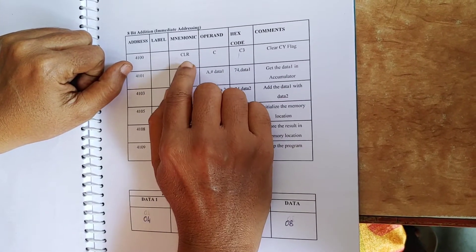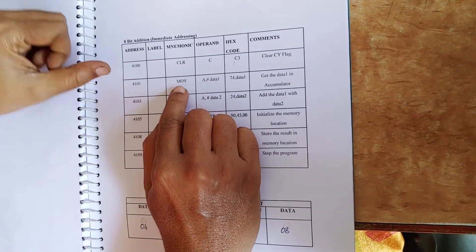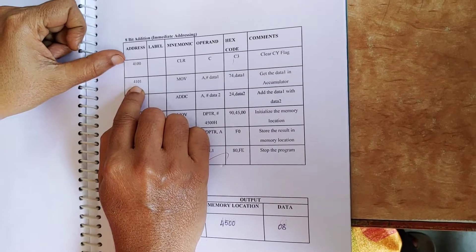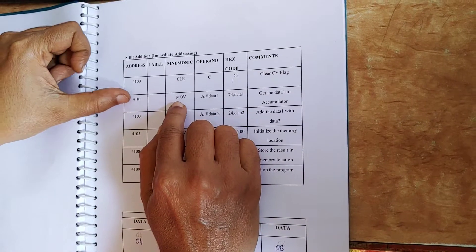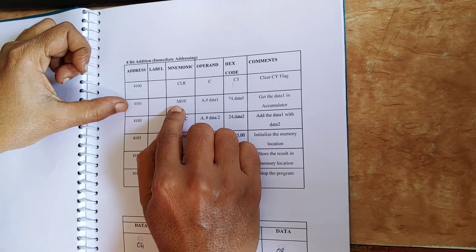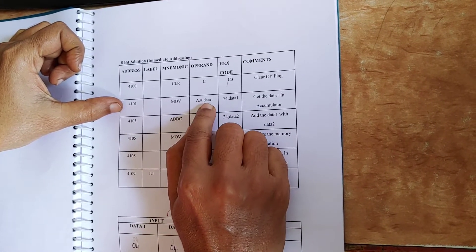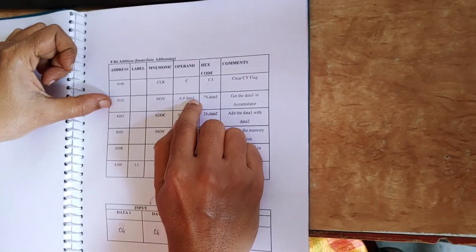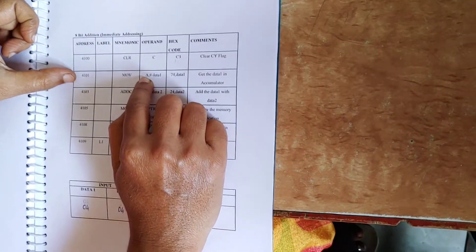CLRC is used to clear the carry flag. Next, the program address is incremented by 1 to 4101, and at this program counter address we take the mnemonic MOV A, #data1. Here #data1 is our first data — whatever 8-bit value you want to give is loaded directly into the accumulator.